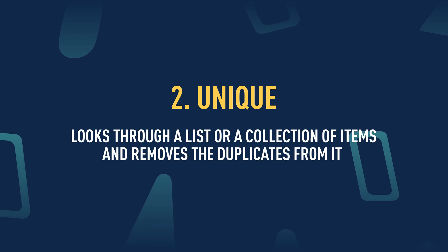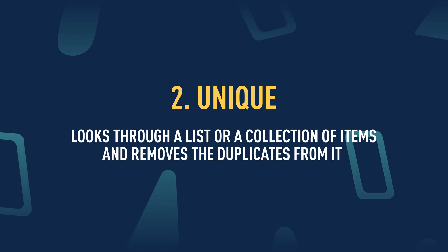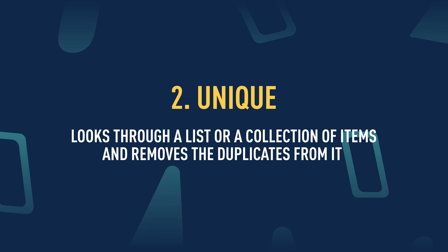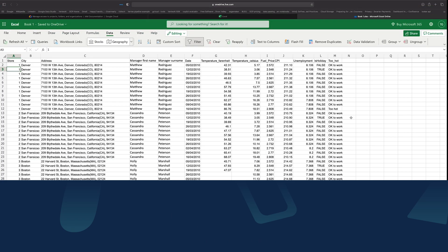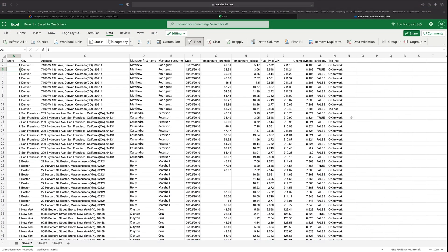The unique function is a function that looks through a list or a collection of items and basically removes all the duplicates from it. So what you get in return is just a list of unique items.